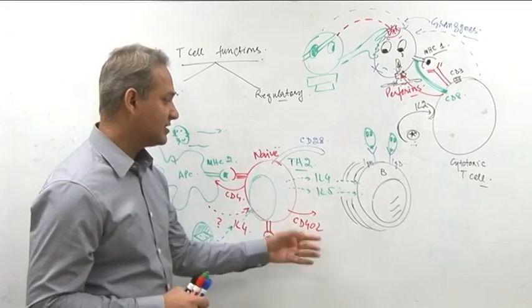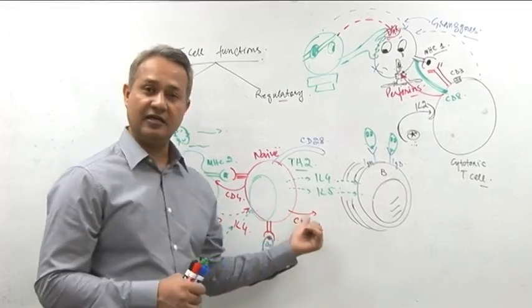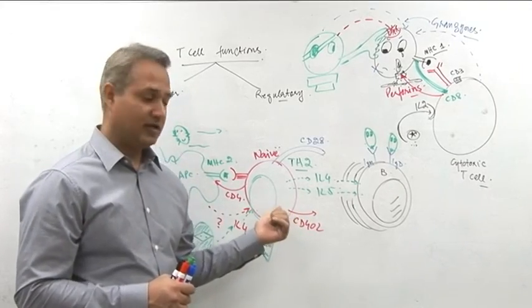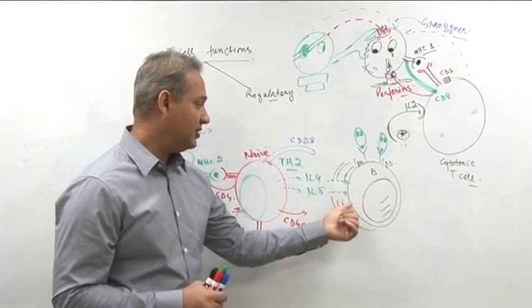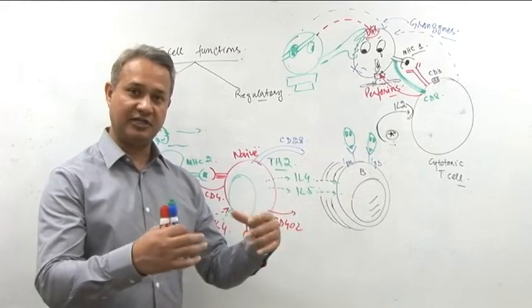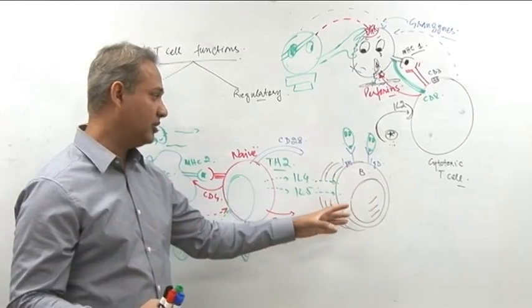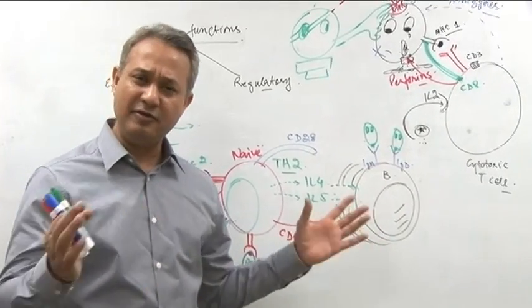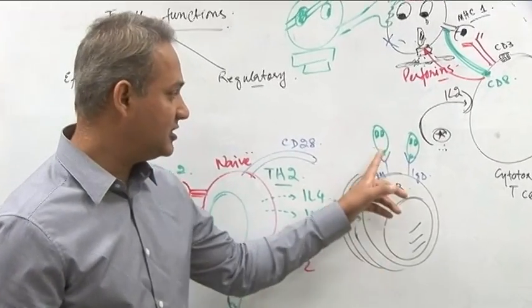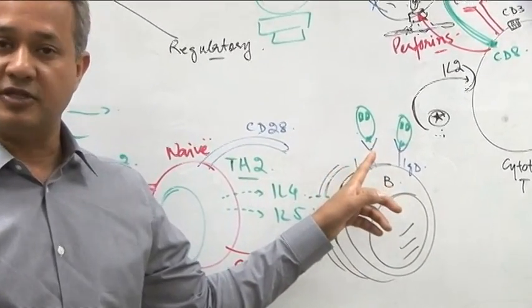So continuing talking about the B cells. Here the helper cell, this is helper 2 cell, is now helping the B cell to proliferate and differentiate and grow and start releasing the immunoglobulins. Which B cells? Every B cell? No. Those B cells which are primed with the pathogen.